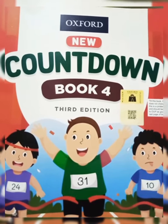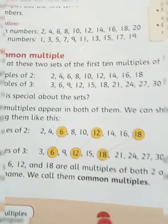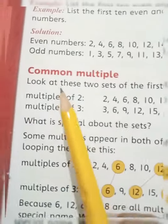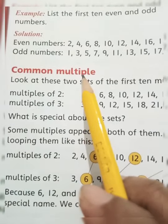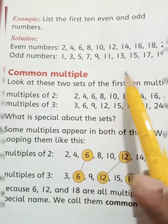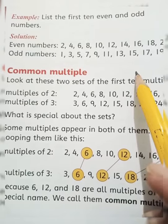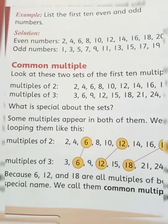Open your book, page number 40. We are on page number 40. The heading is Common Multiple.